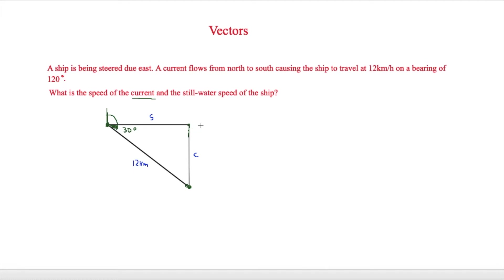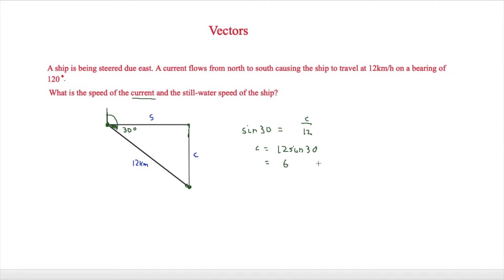To find the current c, we use trigonometry. Using SOHCAHTOA, sine equals opposite over hypotenuse. So sine 30 equals c over 12, because c is the opposite side and 12 is the hypotenuse. Therefore c equals 12 sine 30. Make sure your calculator is in degrees, and you will get 6 kilometres per hour.